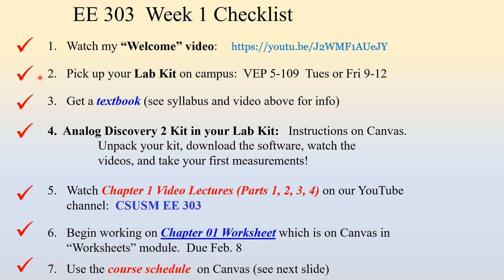Next, be sure to pick up your EE-303 lab kit on campus this week or next week, but you probably want to do it this week. The lab kits can be picked up in person on campus at Viasat Engineering Pavilion, the lab, which is Building 5, Room 109. You can go on Tuesday or Friday from 9 to 12 in the morning, sign out your lab kit, and take it home with you.